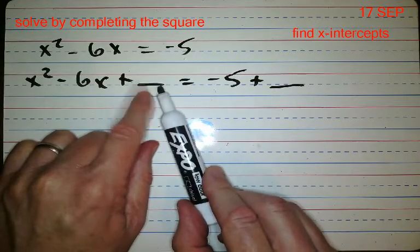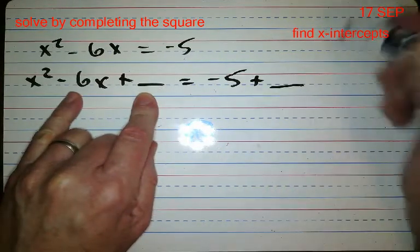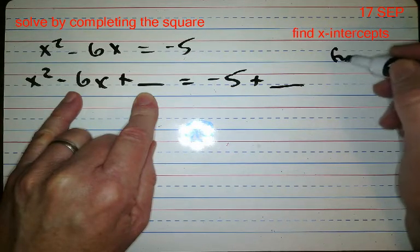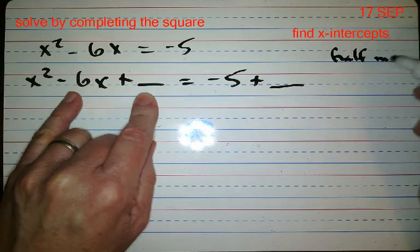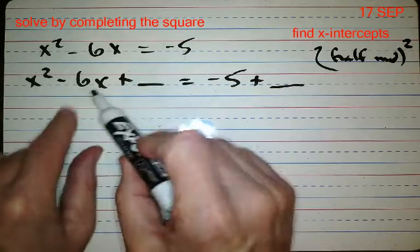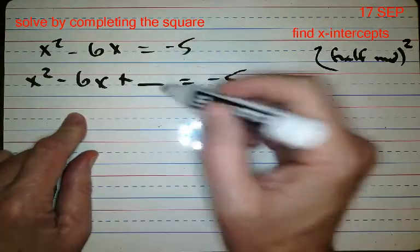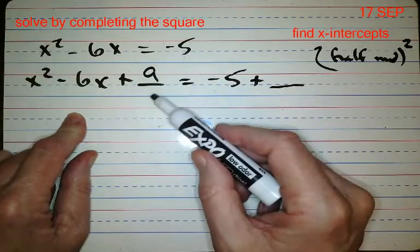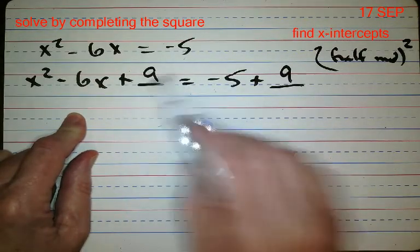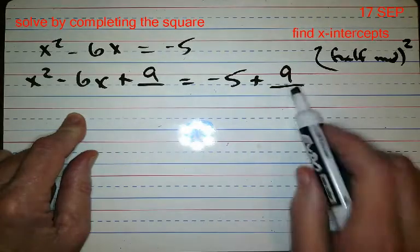You have to figure out what half the middle is, right? So half the middle and then square it. So half of this is three, three squared is nine. So what's different about this is there's an equal sign in the problem and you have to put a nine on both sides where the blanks are.